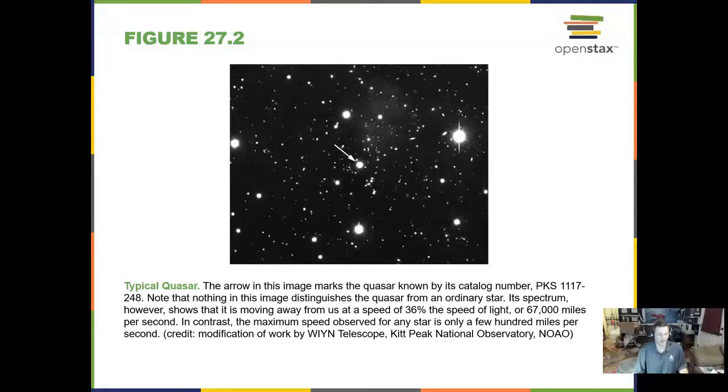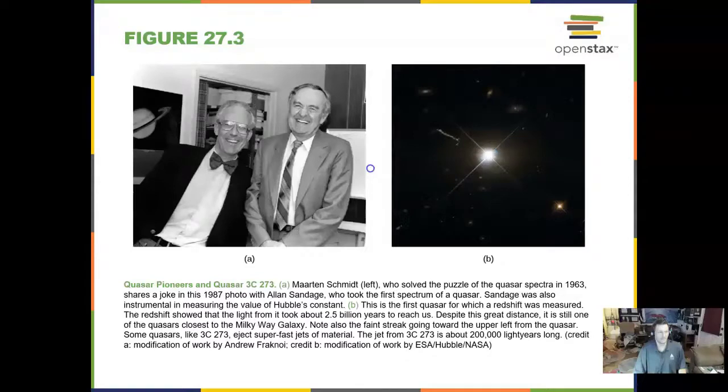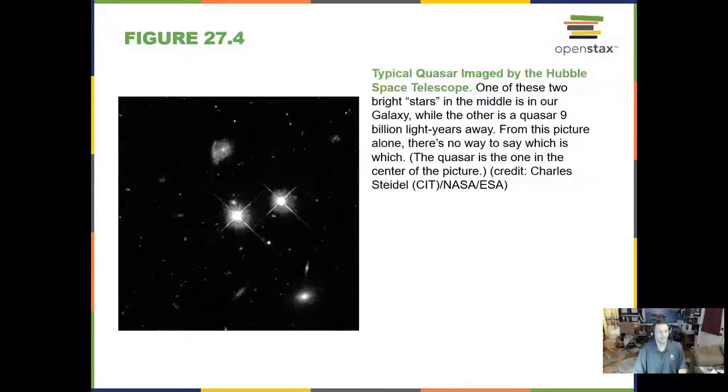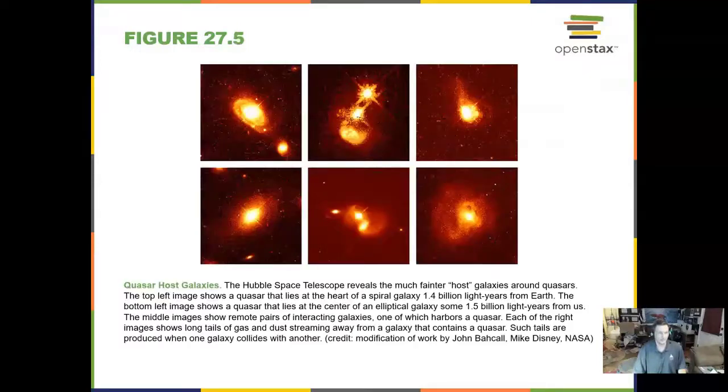Here is a quasar, and it's known as a quasar because in an image like this it looks like a quasi-stellar object. That means quasar, quasi-stellar. Here is another quasar in the Hubble Space Telescope, and quasars in other galaxies.